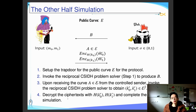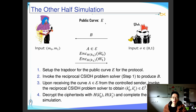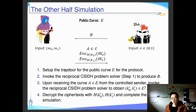To use this trapdoor to complete the corrupt sender simulation: the adversary is a corrupt sender Alice who has two messages but may not encrypt them honestly. We set up a trapdoor for the public key curve E, invoke the reciprocal CSIDH problem solver to generate the B element for the receiver, and upon receiving the curve [A]E from Alice, we invoke the problem solver to extract the two decryption curves. We use these two curves to decrypt the ciphertexts and send the two messages to the trusted party in the ideal world, completing the simulation.